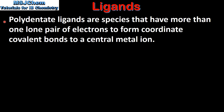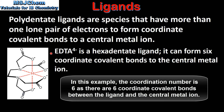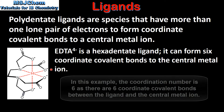Polydentate ligands are species that have more than one lone pair of electrons to form coordinate covalent bonds to a central metal ion. An example is EDTA which is a hexadentate ligand. It can form 6 coordinate covalent bonds to the central metal ion.